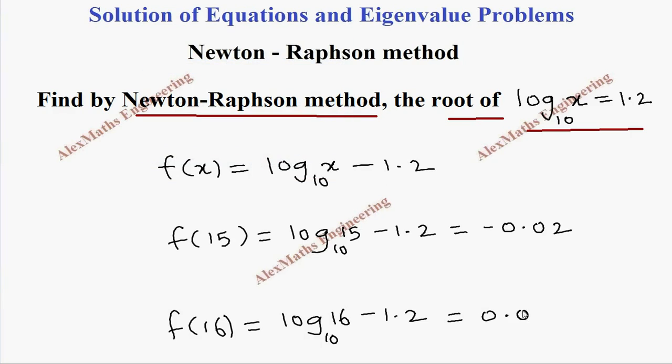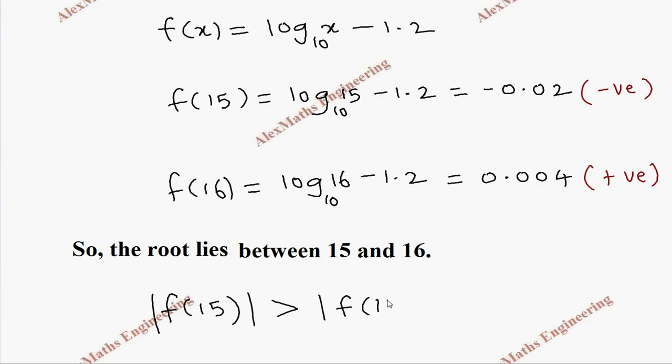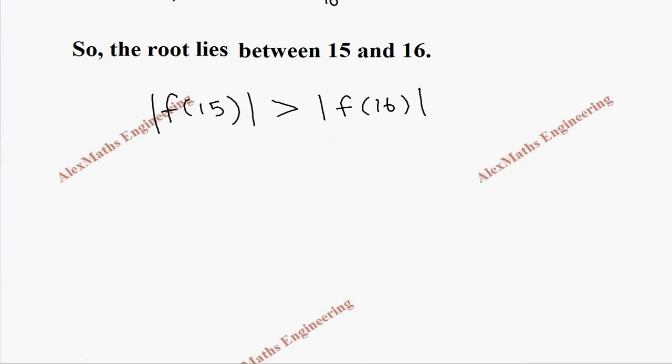So we got two values of x for which f of x changes from negative to positive. It means the root lies between these two values. So we can say the root lies between 15 and 16. And among these two values, when we take the modulus of f of 15 and modulus of f of 16, we find modulus of f of 15 is greater than modulus of f of 16. So the root is closer to 16.